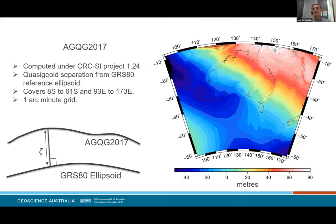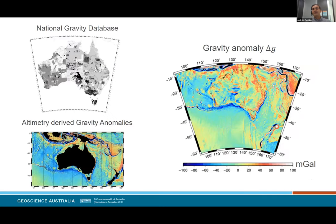The separation between the quasi-geoid model and the GRS-80 ellipsoid is shown in the figure on the right, with variations between minus 50 and 80 metres. If we were to zoom out a little bit further, we'd see that the geoid-to-ellipsoid separation is zero on average over the whole Earth — we just happen to live on a part of it where it has this kind of northeast-southwest trend.